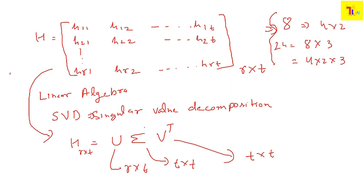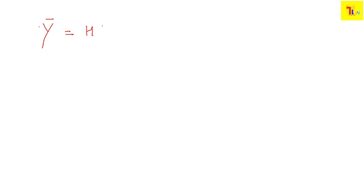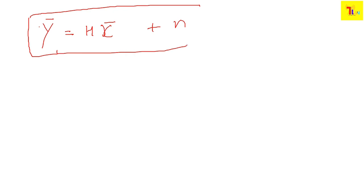So the channel model is: y = H·x + n, in vector format. H is the channel matrix of dimension R×T. x is the transmitted signal vector of dimension T×1. Both y and n are vectors of dimension R×1. This is your complete channel model.